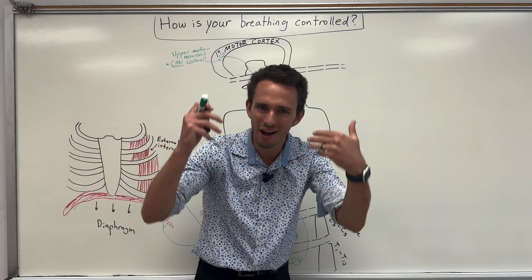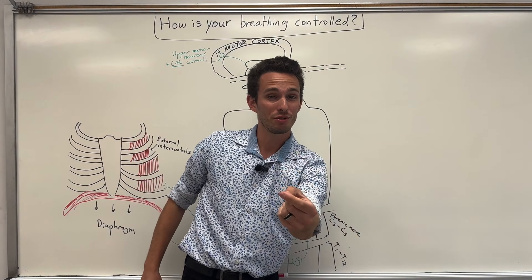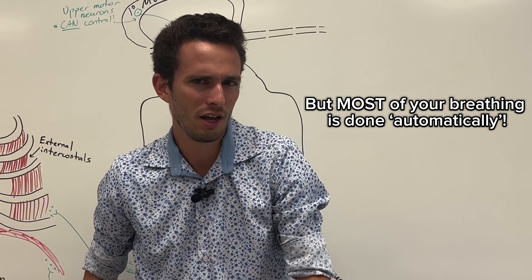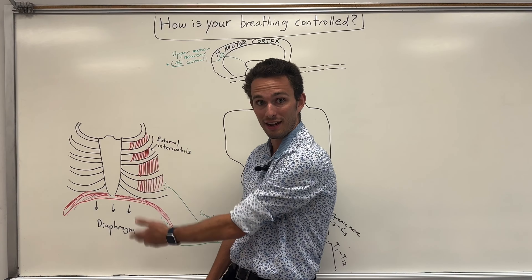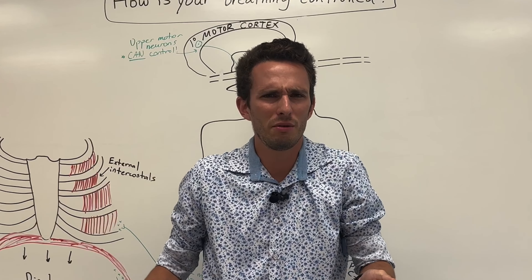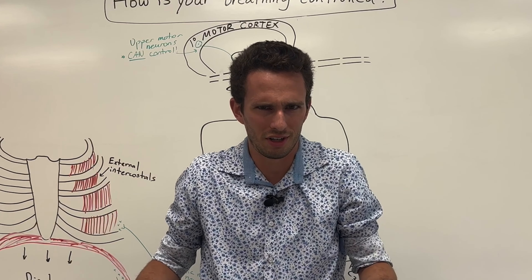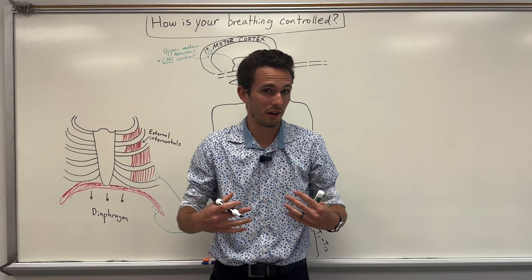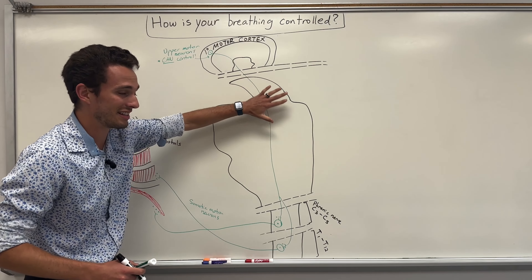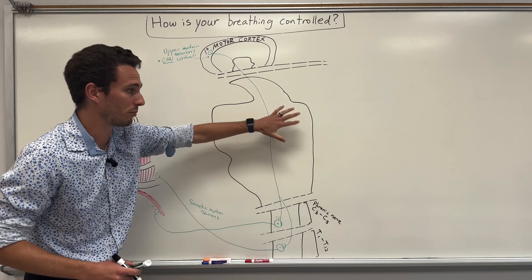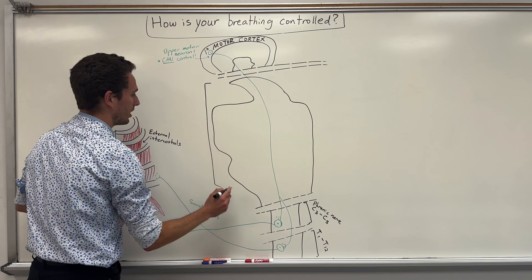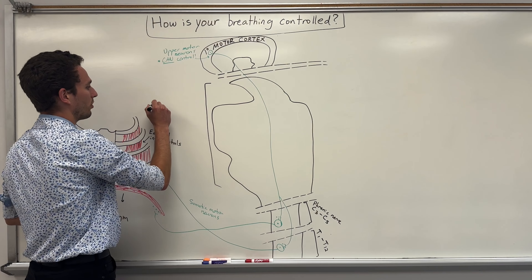Amazing. But most of your breathing is actually done automatically — you are breathing in and out without even consciously being aware of it. Well, how does that work? Anytime you're doing something involuntary, it's usually going to be happening within the deeper regions of your brain, specifically in this region at the base of your brain. This is called your brainstem.